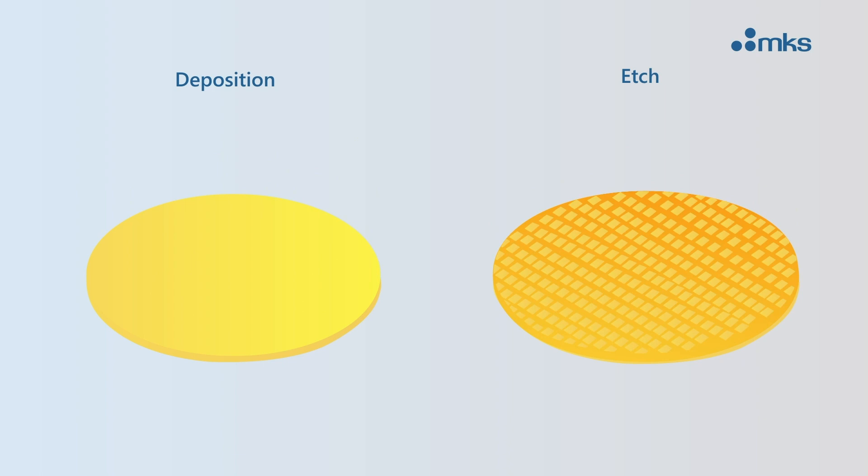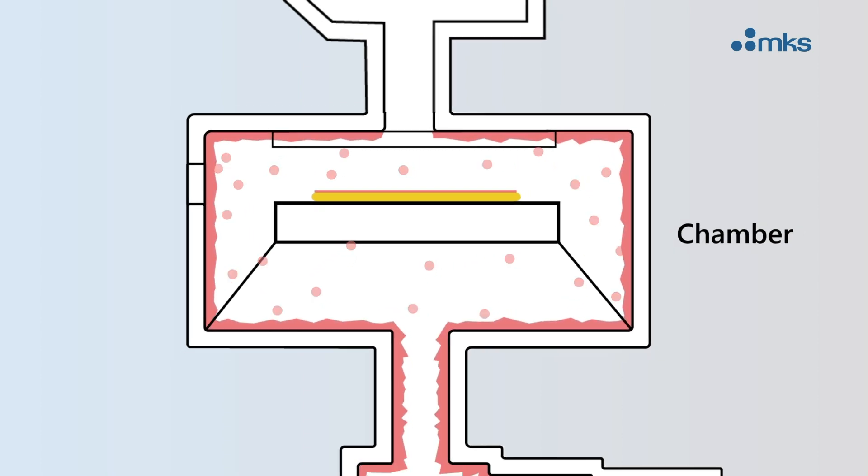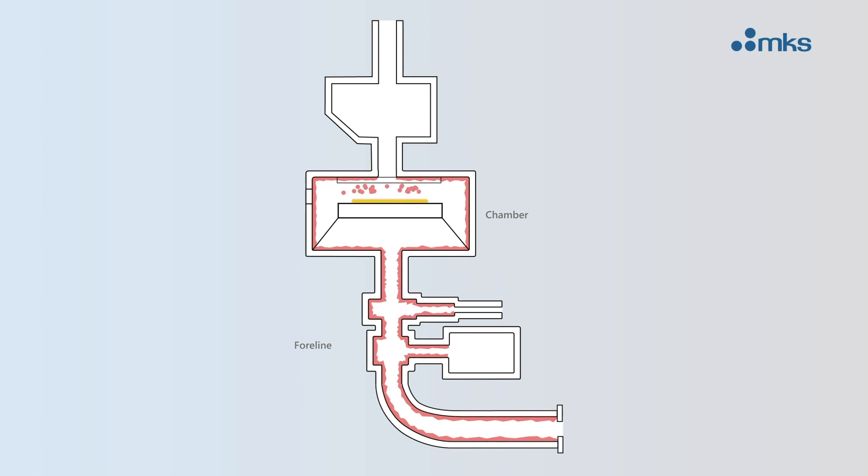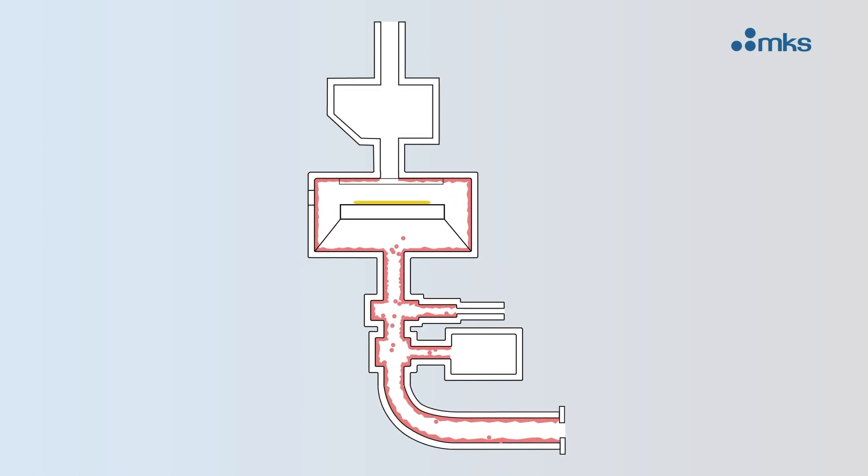Deposition and etch are key processes in semiconductor wafer manufacturing. Deposition adds a thin film to the wafer but also causes material buildup on chamber and foreline walls. Etching removes material from the wafer which can then deposit in the pumping lines.